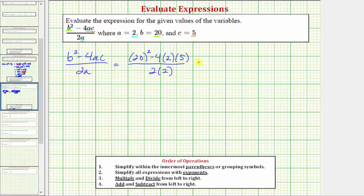So looking at the numerator, the first step is to simplify the exponents. 20 squared is 20 times 20, which equals 400. So we'd have 400 minus 4 times 2 times 5.